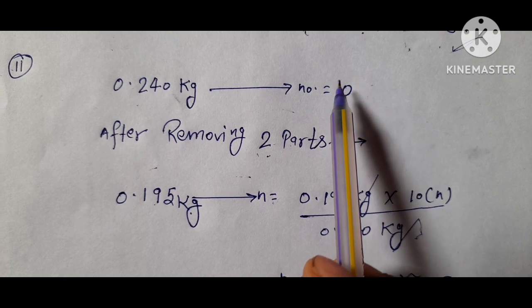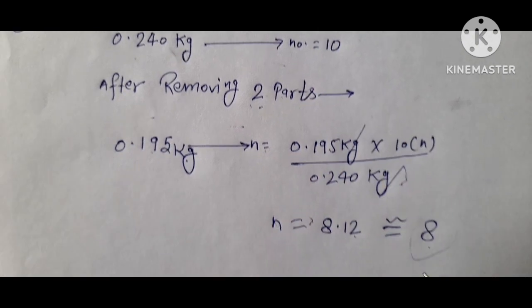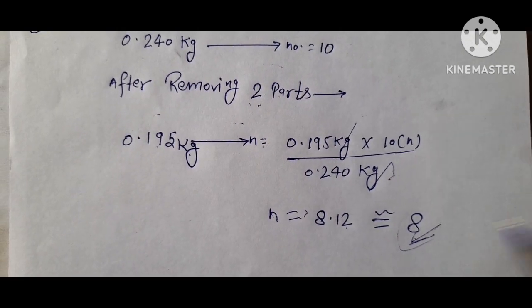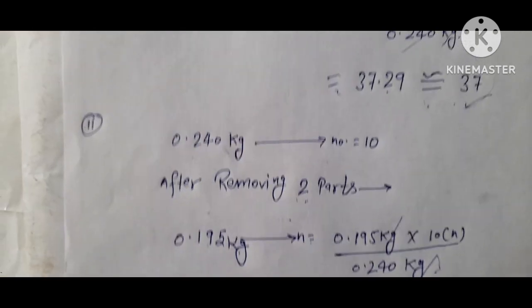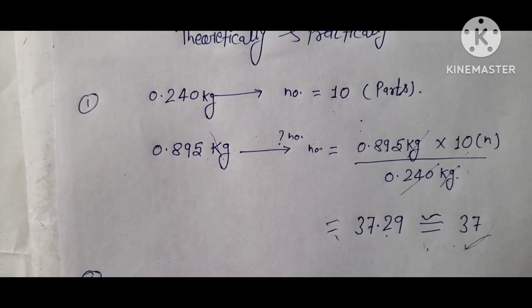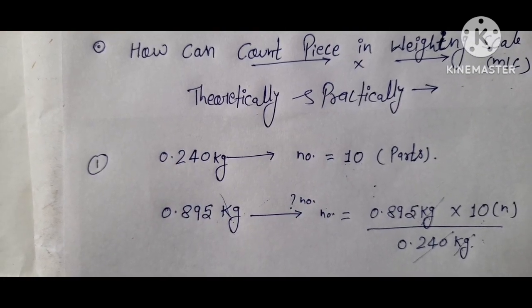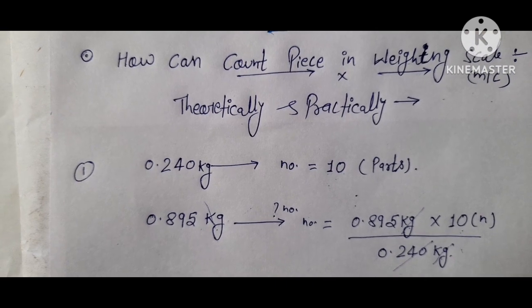After removing 2 parts from 10, we find out 8 parts remain. So this is all about the practical and theoretical value on a weighing scale or weighing machine.